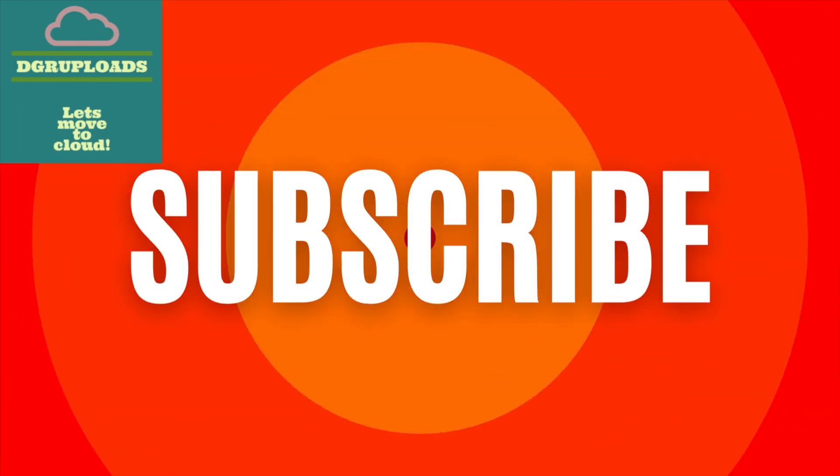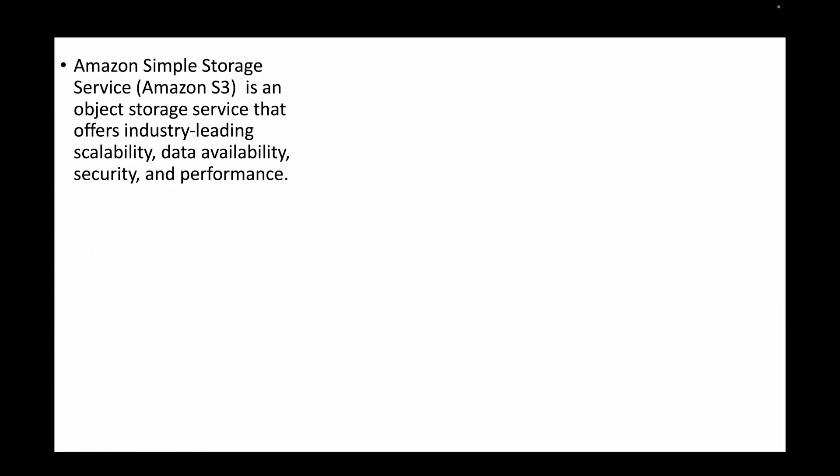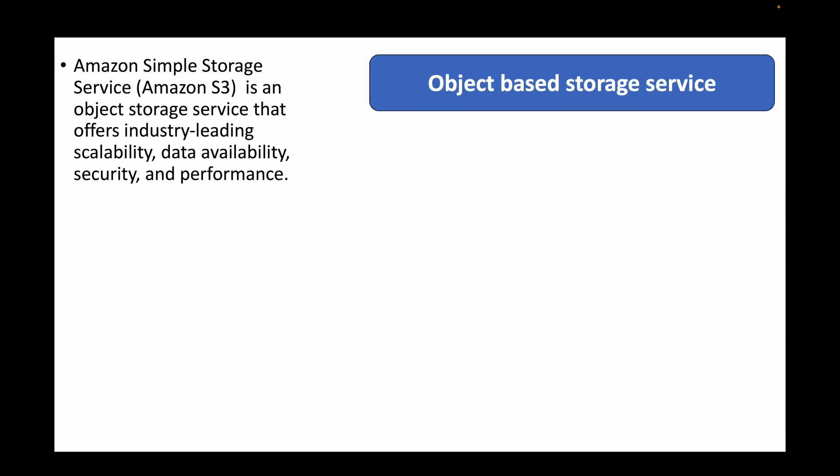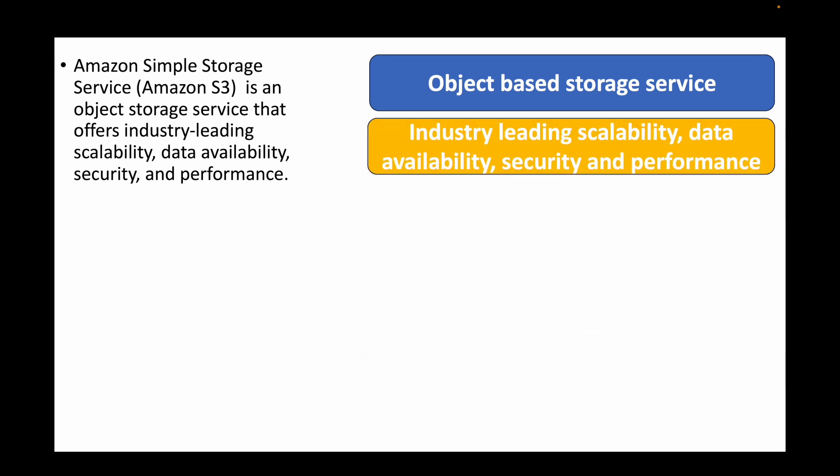Hello and welcome back. In today's session we will look at an introduction to S3 buckets. S3 buckets is another storage option that we have in AWS, and we can use this to store our data within the cloud. S3 simply stands for Amazon Simple Storage Service, and this is an object-based storage — meaning whatever data we store in the S3 bucket will be treated as an object. This provides us with scalability, availability of our data, security, and also better performance in terms of accessing the data.